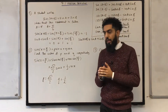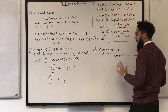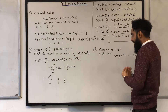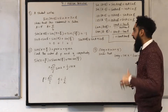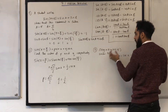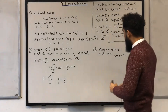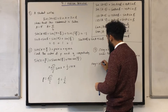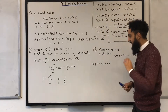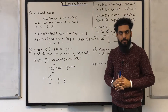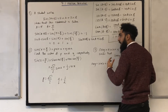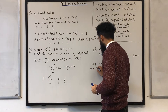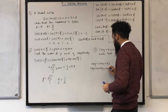Let's have a look at question 3. It says cos Y equals sin(X plus Y). Show that tan Y equals sec X minus tan X. Starting with cos Y equals sin(X plus Y), I expand the right-hand side using the sin(A plus B) addition formula, giving sin X cos Y plus cos X sin Y.